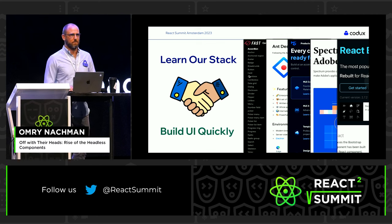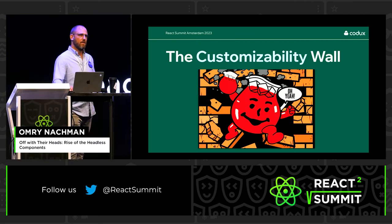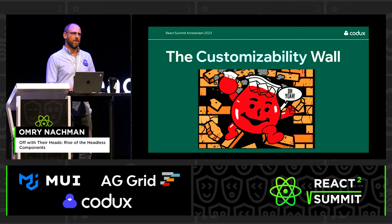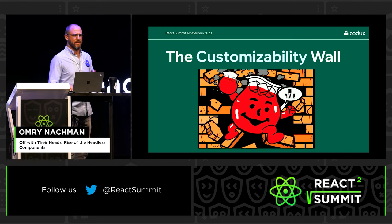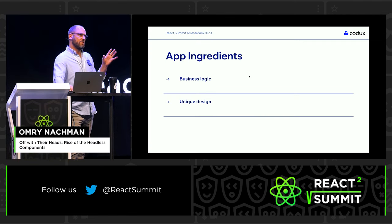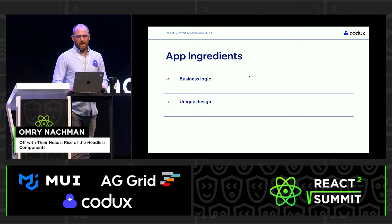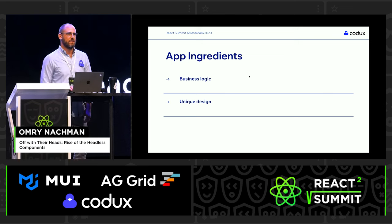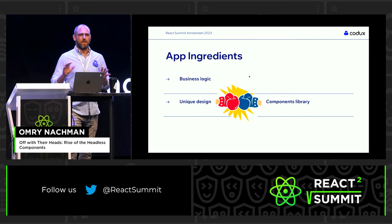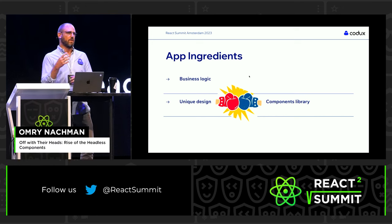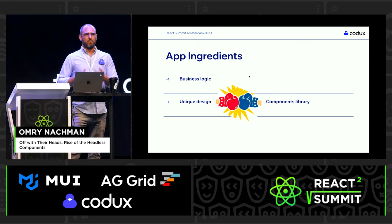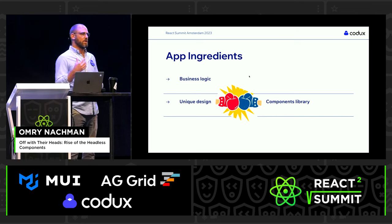But there is this problem with all of them — I call it the customizability wall. And you smash into it pretty late in the project when you find that your table and your multi-select don't feel or don't look the same. You promised your product manager bespoke business logic accessible through a beautiful, unique design, and your design and your component library of choice are having a fight. And if you work like me, this is especially frustrating because you see it very late in the game.